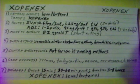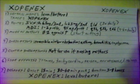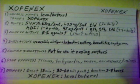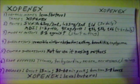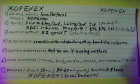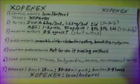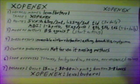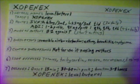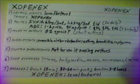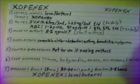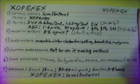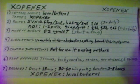Contraindications for Xopenex: not for use in nursing mothers. Side effects are tremors, tachycardia, nausea, nervousness, and dizziness. Xopenex has an onset time of 15 minutes, a time to peak of 30 to 60 minutes, and a duration of 3 to 8 hours.